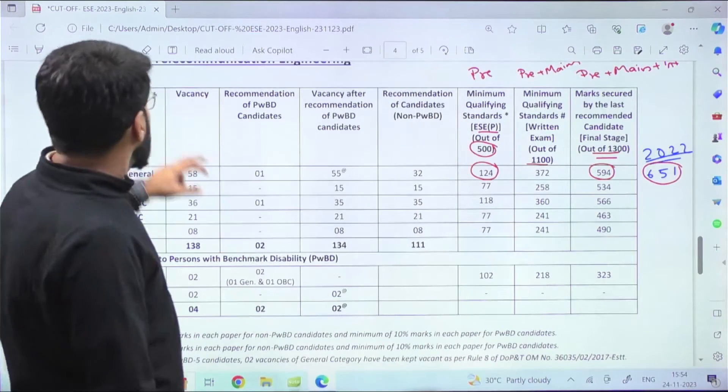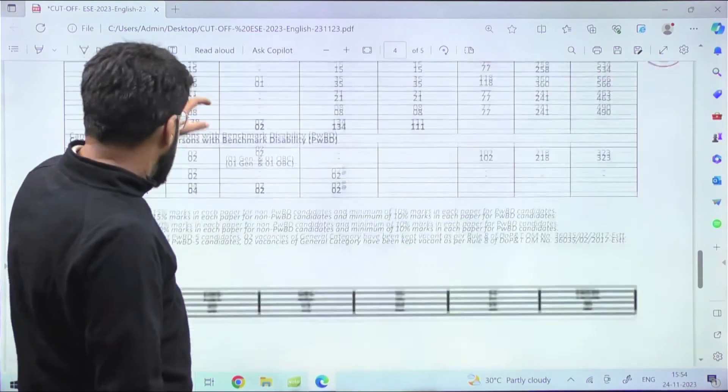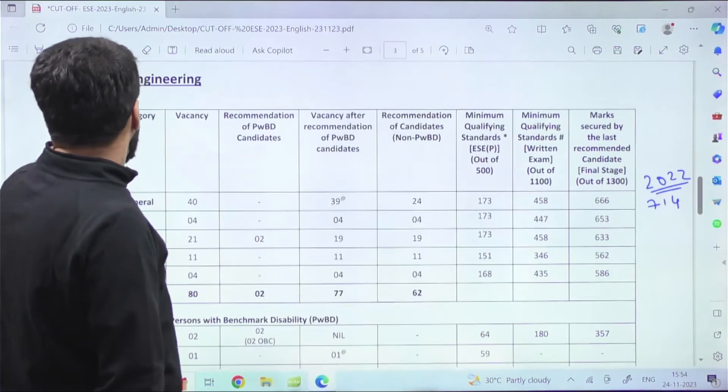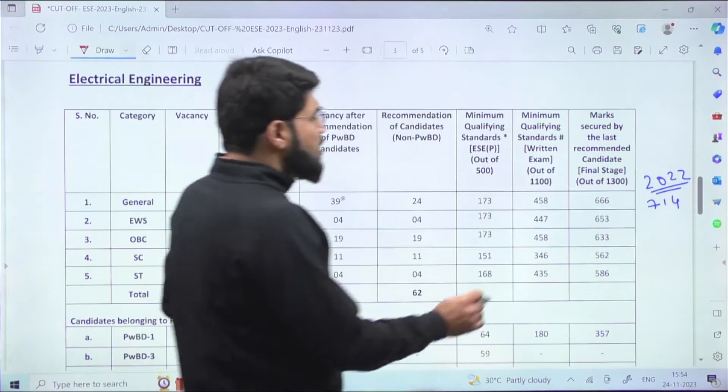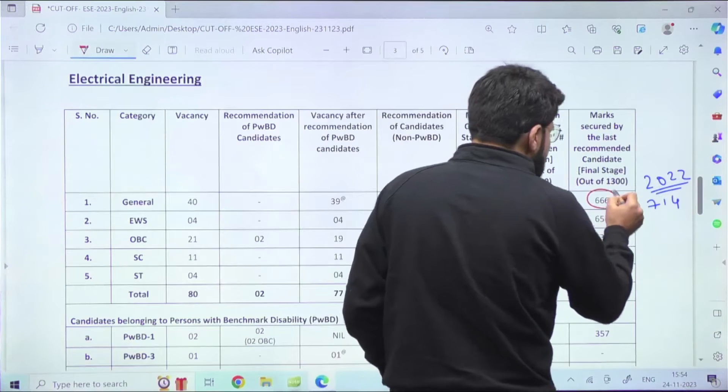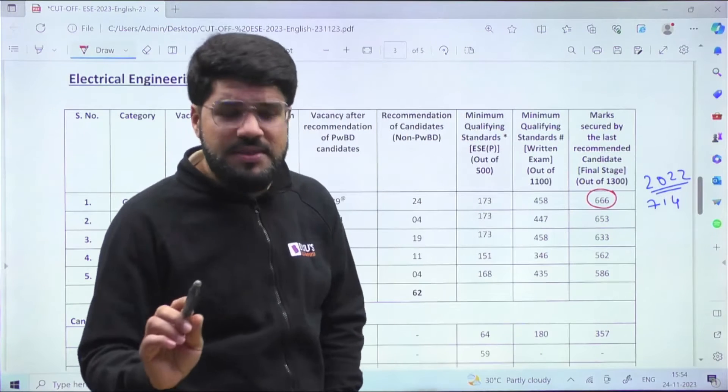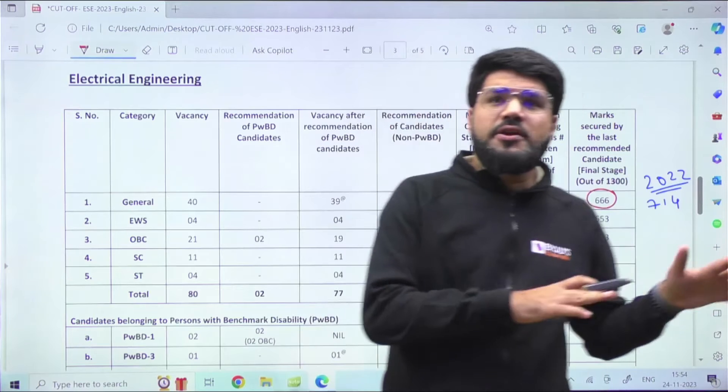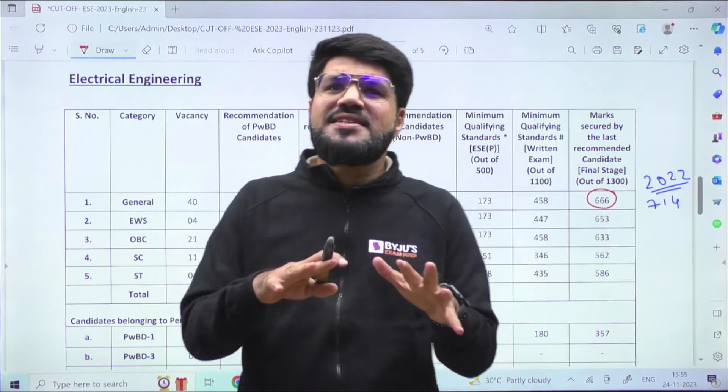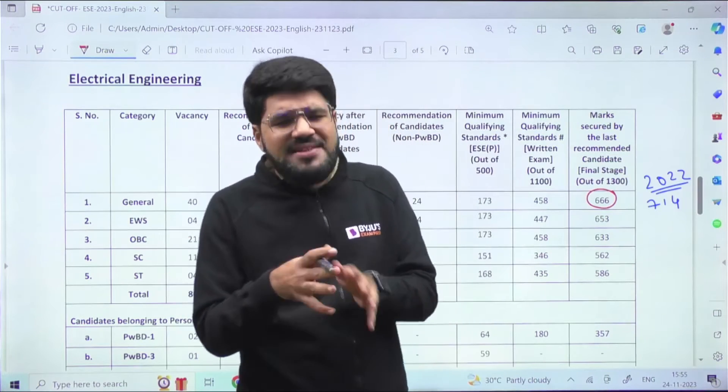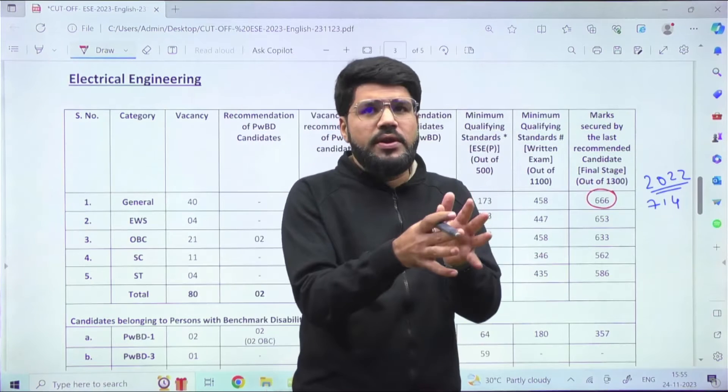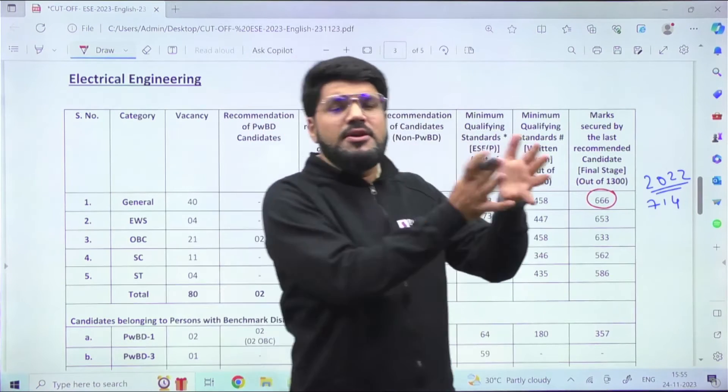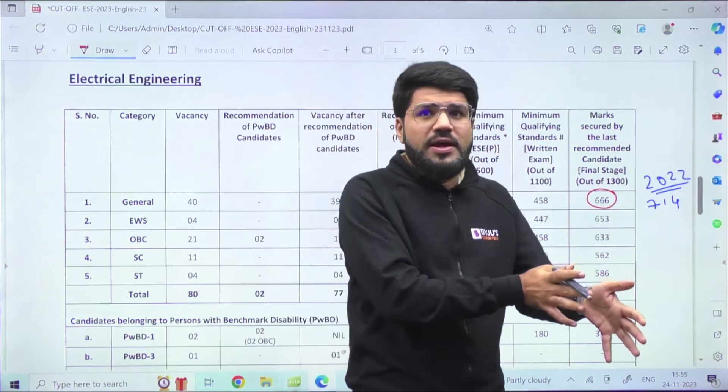Moving on towards Electrical Engineering - this year it's 666, which is just very close to 50 percent. You can observe cutoffs close to 50 percent for Electrical and less than 50 percent for Electronics. These patterns are unlike GATE examination, because GATE is mostly numerical or conceptual oriented, whereas Engineering Services has 600 marks that are totally written, that is conventional.